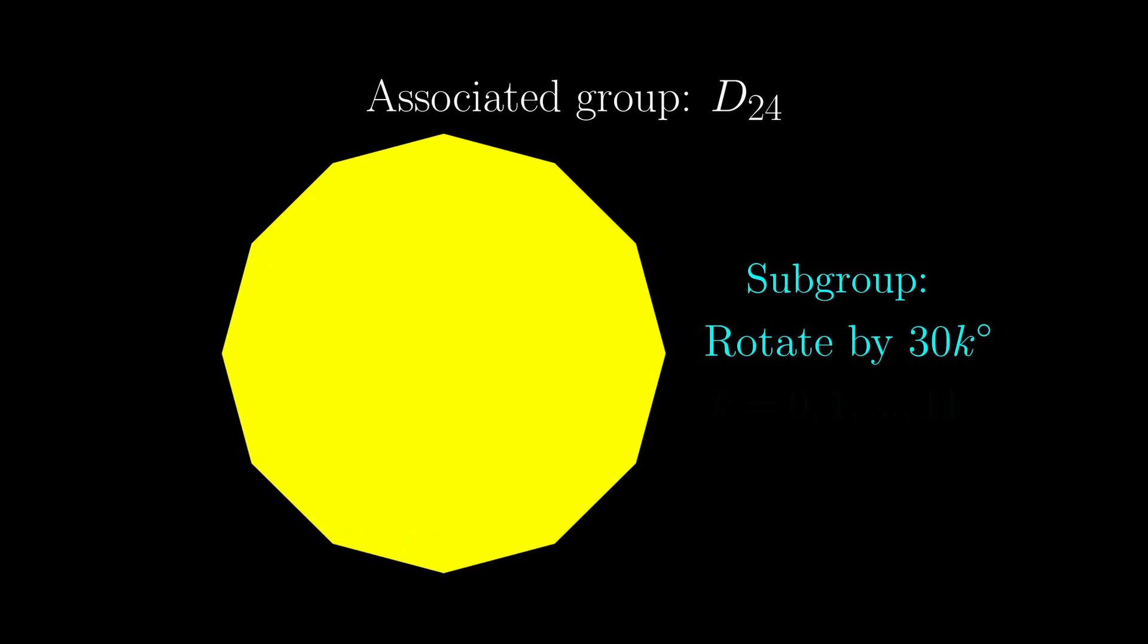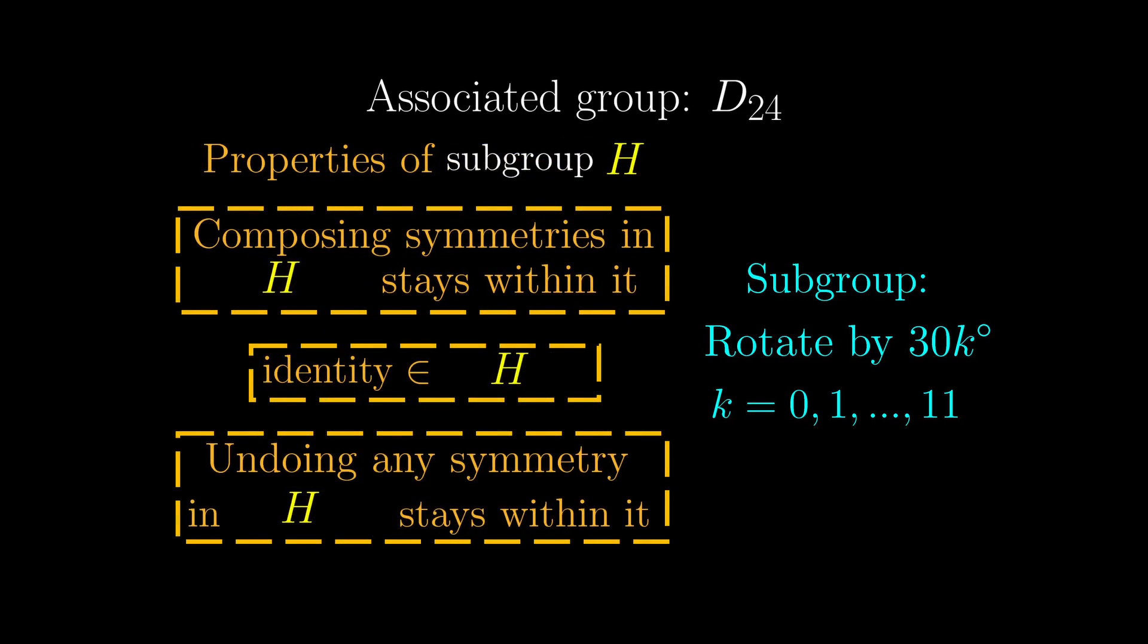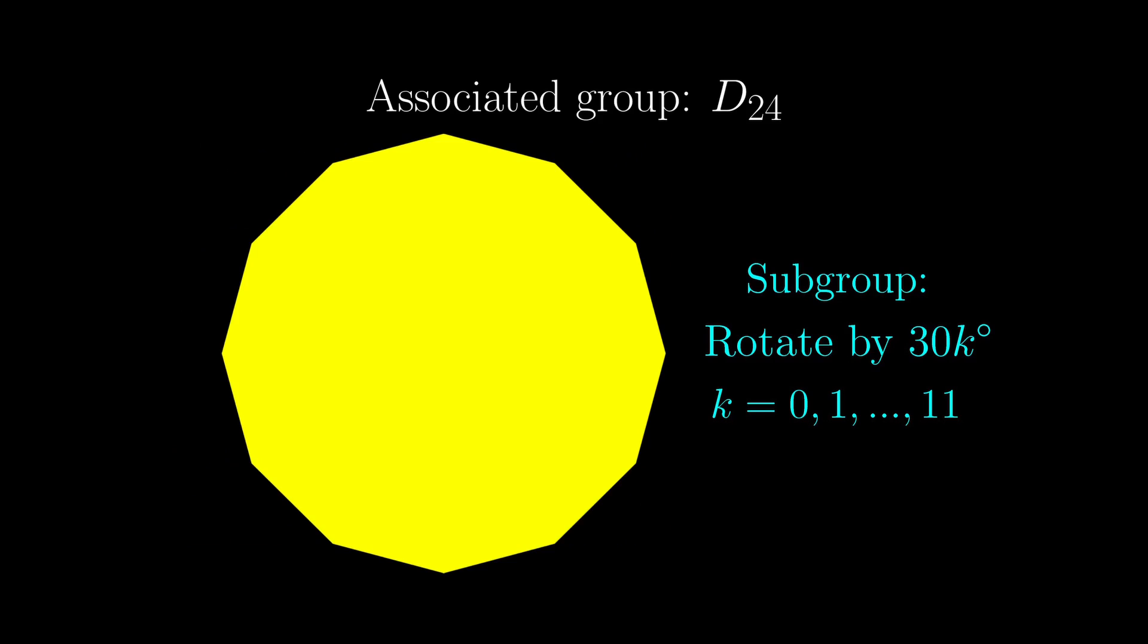This means we are only considering rotations in either direction by a multiple of 30 degrees. You can use this checklist introduced in the Lagrange's theorem video to check that it is indeed a subgroup. We temporarily call this group R12, R for rotation.